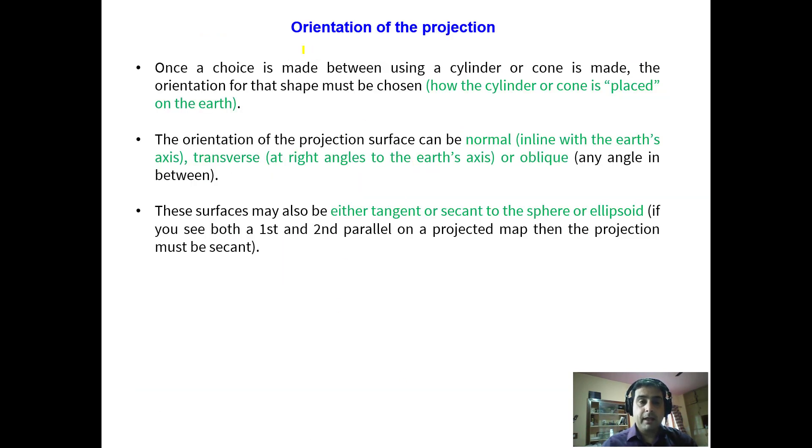Now in addition to choosing the projection surface, the orientation is also important. That is how the cylinder or cone is to be placed on the earth while the projection is to be decided. Now it can be normal, that is in line with the earth's axis. It can also be oblique, that is transverse at right angles to the earth's surface. It can make any angle in between other than the normal. And the surfaces may also be either tangent or secant to the sphere or ellipsoid.